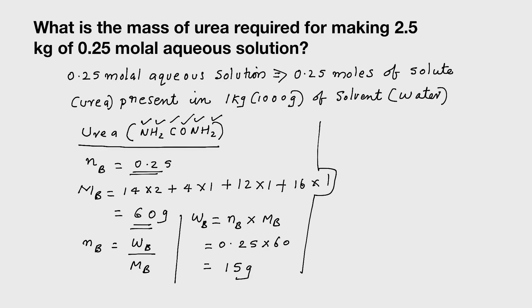1000 gram of solvent contain 0.25 moles of solute, which means 15 gram. So 1000 gram of solvent and 15 gram of solute. So what should be the mass of solution? Mass of solution will be 1000 plus 15, that is 1015 gram. So it is clear that 1015 gram of solution contain 1000 gram of water and 15 gram of urea.